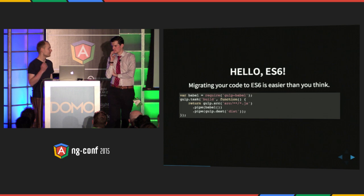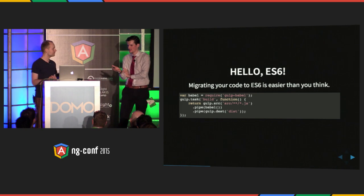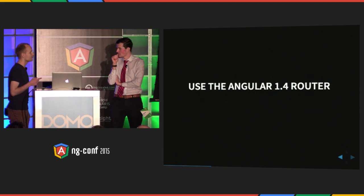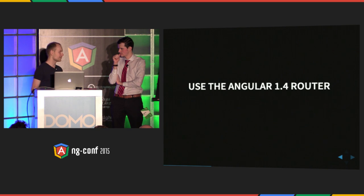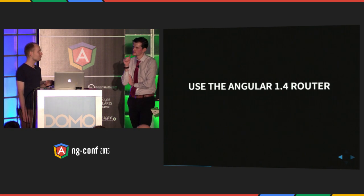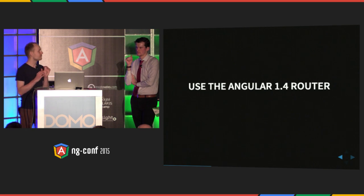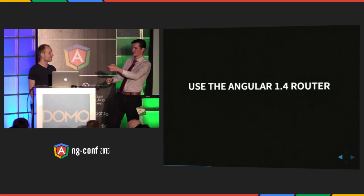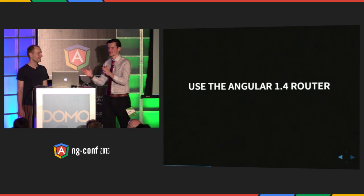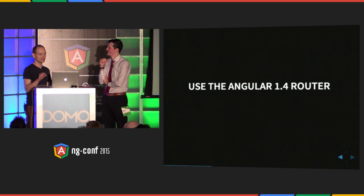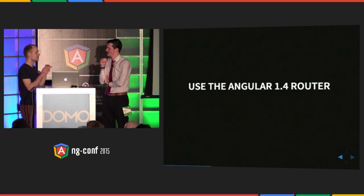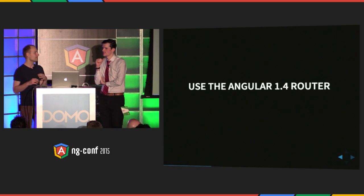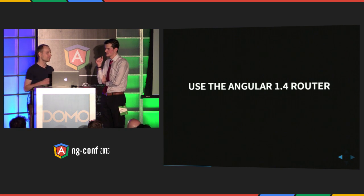What about when Angular 2 comes out and I want to use part of it in my project? You should just use the Angular 1.4 router. The router built in previous versions of Angular is quite poor, but the Angular 1.4 router and the Angular 2 router share the same code base. If you start using this router, you can switch pieces by view — just switch a part of your application, then another part when you're ready. Piece by piece, you're migrating all the code to Angular 2.